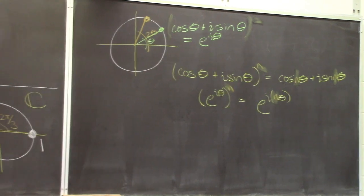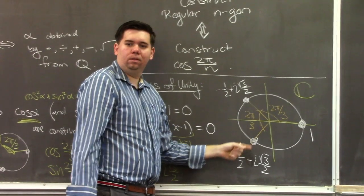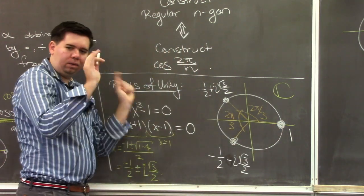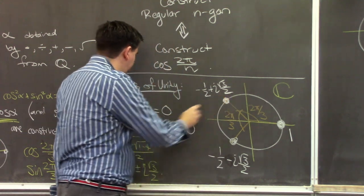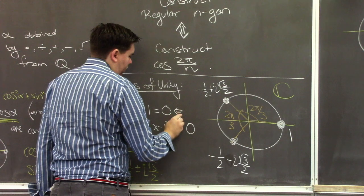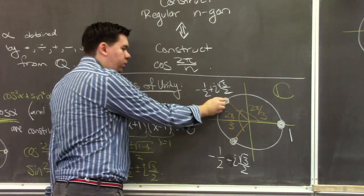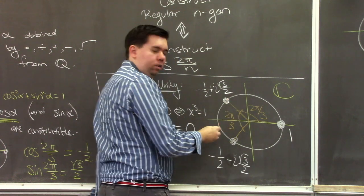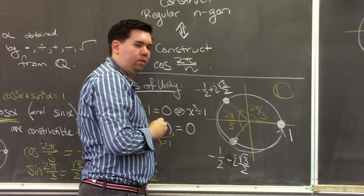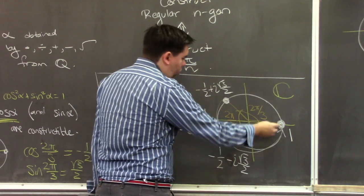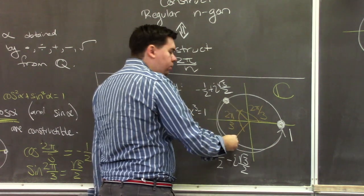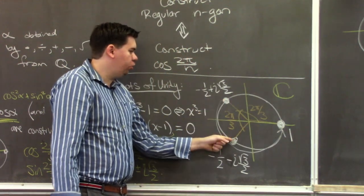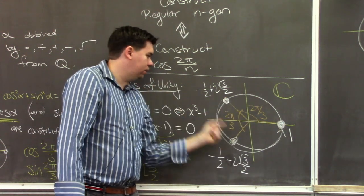Now we can understand why the three cube roots of unity are those three points. Cubing the point at angle 2π/3 triples its angle to 2π, landing back at 1. Similarly, the point at angle 4π/3, when cubed, goes to angle 4π, which also lands at 1. So these are the two non-trivial cube roots of unity — points whose angle, when tripled, lands at 1.